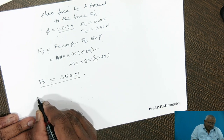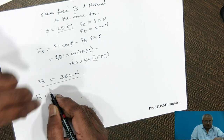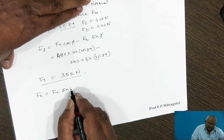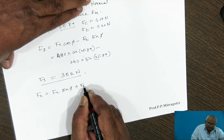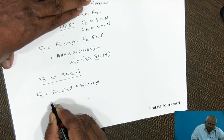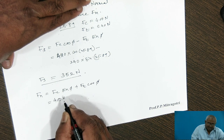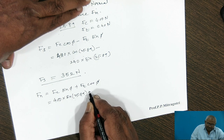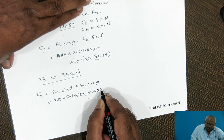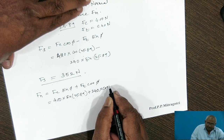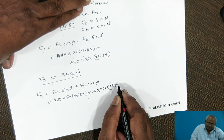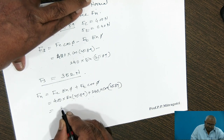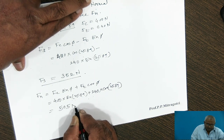We then calculate the normal to the shear force Fn, given by the formula: Fn = Fc sin phi plus Ft cos phi. Substituting Fc = 400 N, phi = 25.89°, and Ft = 240 N, phi = 25.89°, the result comes out to be 505 newtons.